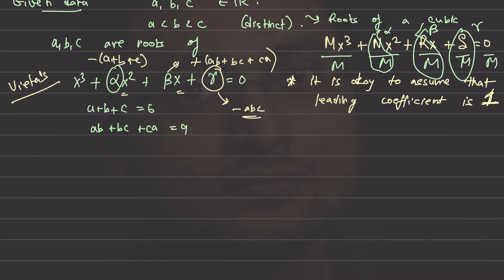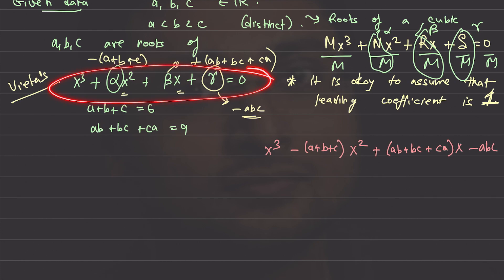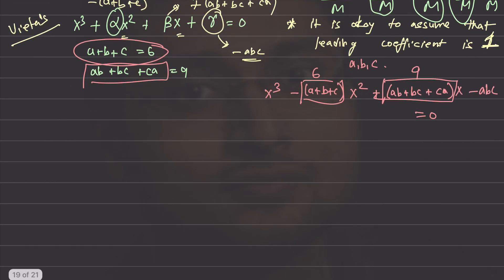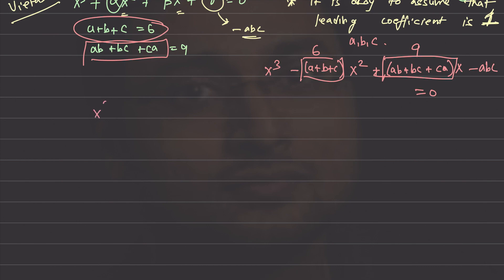We write the equation with this new found information: x³ − (a+b+c)x² + (ab+bc+ca)x − abc = 0. Since a + b + c = 6 and ab + bc + ca = 9, the equation becomes x³ − 6x² + 9x − abc = 0.